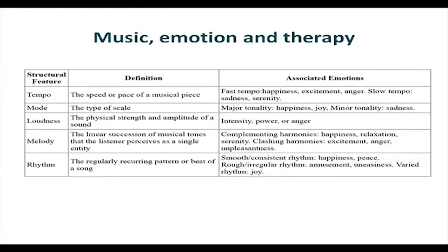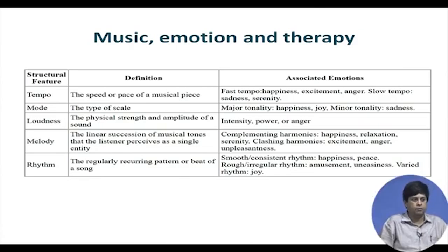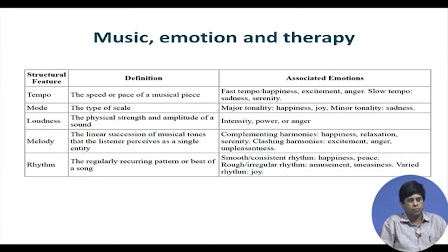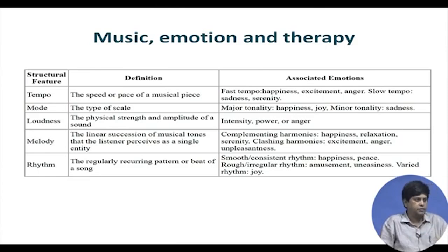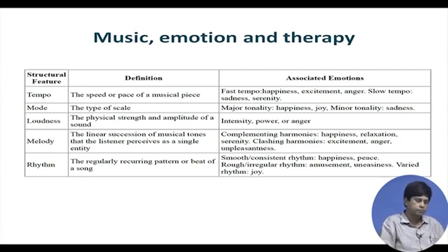Music has a lot of role to play in the context of emotions and therapy. Speed or pace of music very often communicates happiness, excitement, or anger when it is fast, and sadness and serenity when it is slow. We talked about major tones — major chords conveying happiness, minor chords conveying sadness — loudness and intensity, melody where something is being complemented, harmonies with two things happening simultaneously, and rhythm as regularity of pattern of beats.